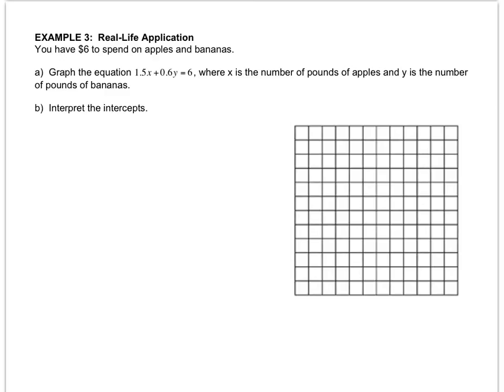Example 3. You have $6 to spend on apples and bananas. Graph the equation 1.5X plus 0.6Y equals 6, where X is the number of pounds of apples, and Y is the number of pounds of bananas.